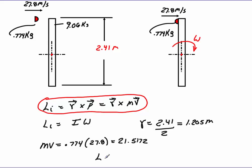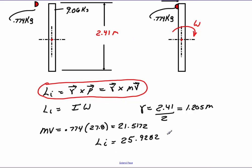So then we can say that the initial angular momentum at impact is going to be 21.5172 times 1.205, and that's going to give me a value of 25.9282. So that's going to be our initial angular momentum, and the units on that would be in kilograms times meters squared over seconds.